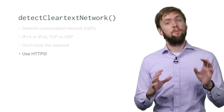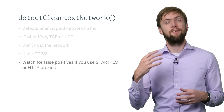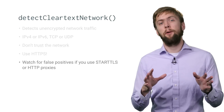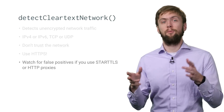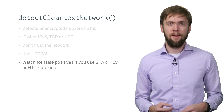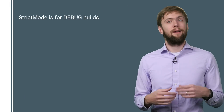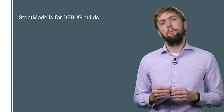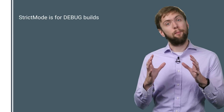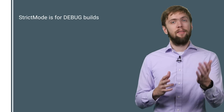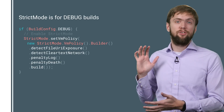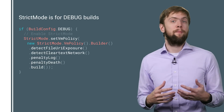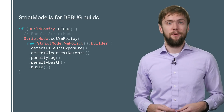One thing to keep in mind: you may find false positives when using STARTTLS protocols or HTTP proxies — something to be aware of if strict mode starts killing you when you're in fact doing it right. With your app creating extra logging and being killed and all that, you probably want to keep in mind that strict mode should only be enabled for debug builds. The easiest way to do that is by wrapping your strict mode calls in a BuildConfig.DEBUG check, which is automatically set to false on release builds.